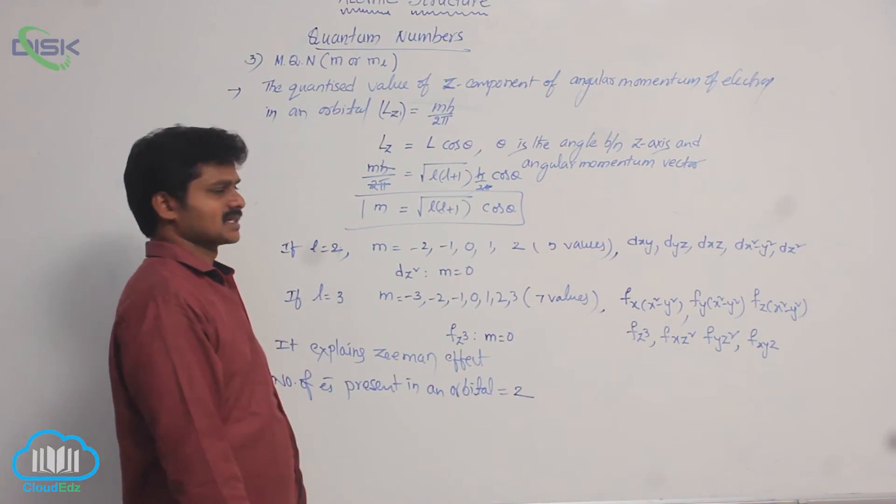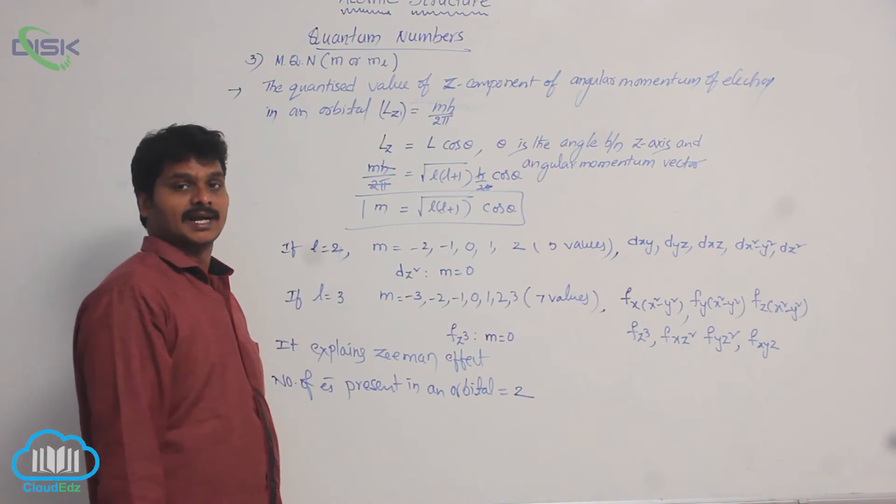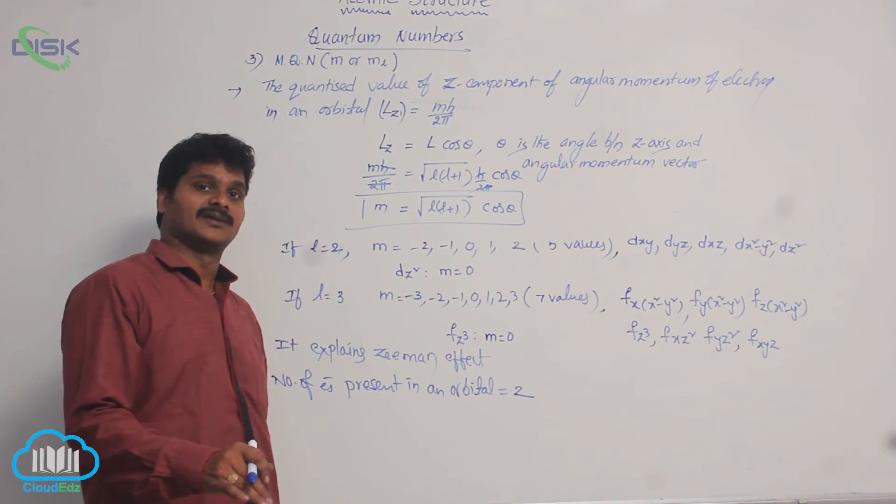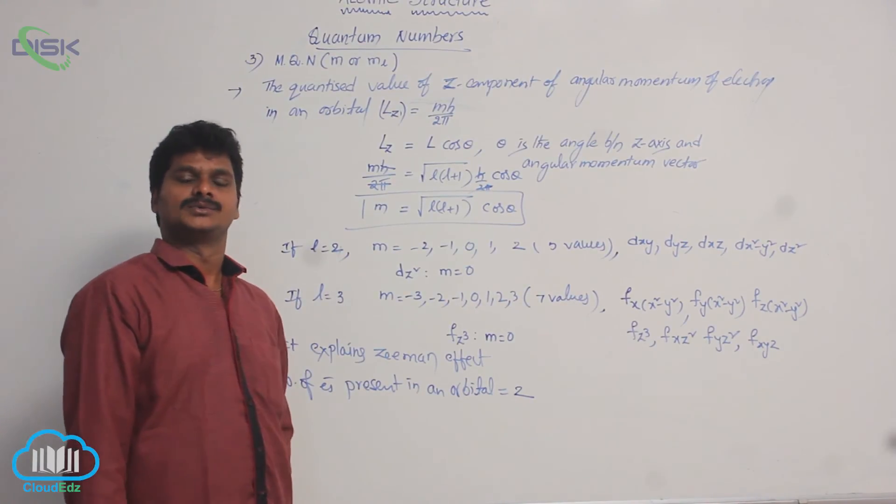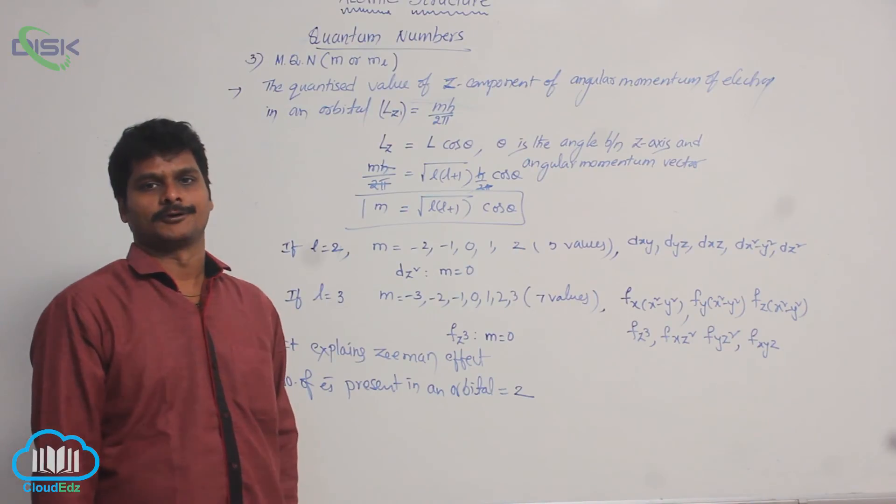Okay, so this expression is obtained from the z component of angular momentum of electron in an orbital. So, these are all uses of magnetic quantum number.